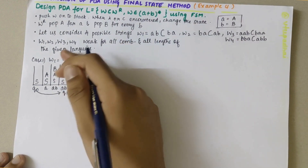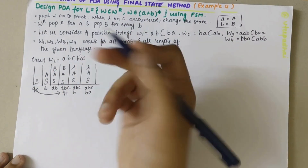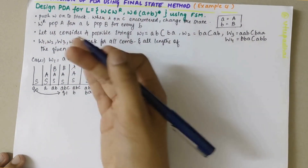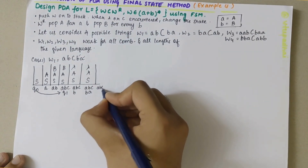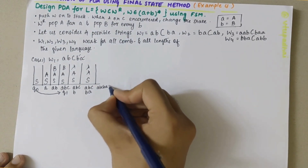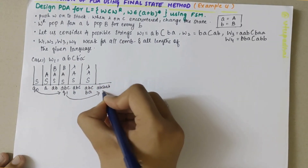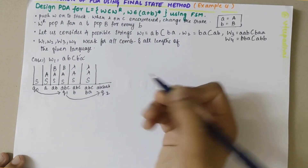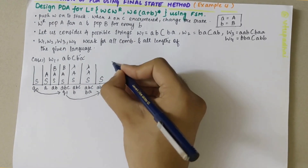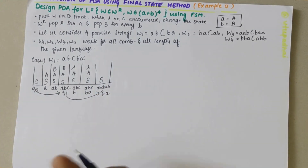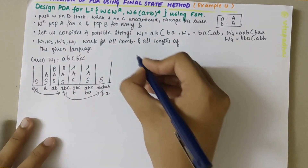Once the word A B C B A is finished, we have lambda at the end. Whenever lambda is encountered, we need to change the state and the contents — S — remain on the stack, meaning the stack is empty. This completes case 1.